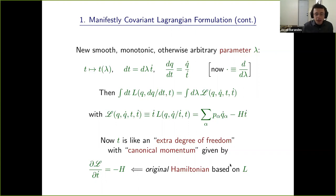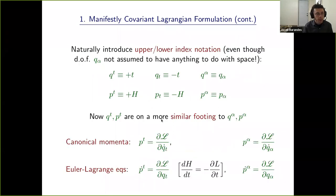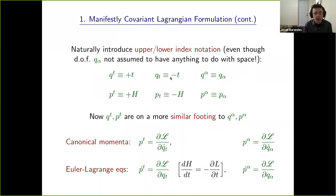We can rewrite our action functional in terms of a new Lagrangian script-L, which is literally t-dot multiplied by the old L, where dots are now derivatives with respect to the arbitrary smooth parameter. In terms of canonical momenta and Hamiltonians, we get an expression with a relative minus sign that's going to be important — you can already see something that looks vaguely relativistic here, like a Lorentzian dot product, and we'll see that is in fact the case.